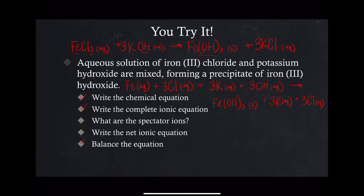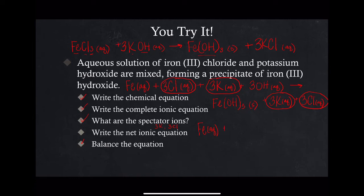Now, what are the spectator ions? We need to look for those that are on both the left and right sides of the equation. We see potassium and chlorine are our spectator ions. Notice there are 3 of each of those. When I rewrite this net ionic equation, I'm going to remove those. So I've got aqueous Fe³⁺ plus 3 OH⁻ aqueous yields Fe(OH)₃ solid. That is our net ionic equation.